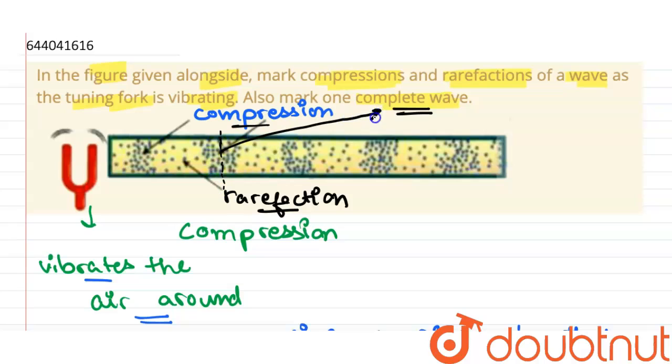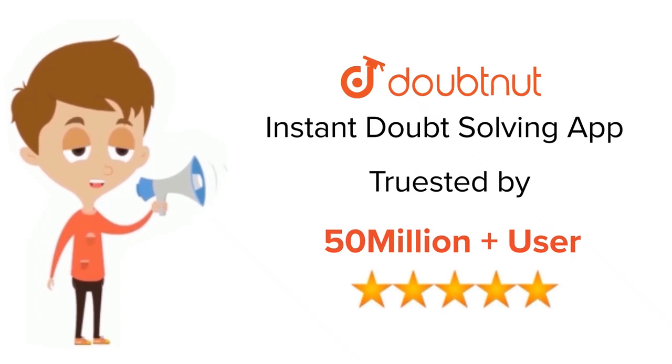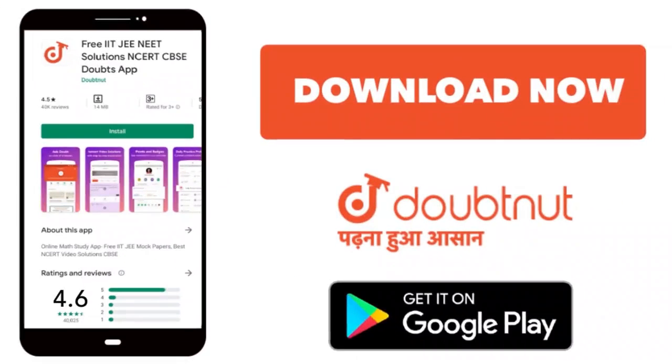This is one complete wave. At this junction, we have completed one wave. That's all, thank you. For class 6 to 12th, IIT-JEE and NEET level, trusted by more than 5 crore students. Download Doubtnet app today.